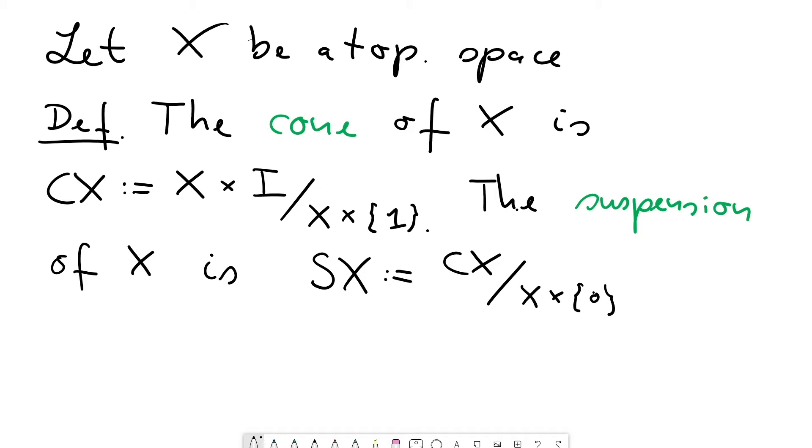Yeah, let's say the space X is a circle. In this case, the cone would look like this. Yeah, so it's a cylinder where you collapse the top copy of X. So in other words, you will get this cone shaped space here. And the suspension in turn now occurs if I also collapse the lower copy here. So then a way to picture this would be something like this. Sort of like a double cone if you want.